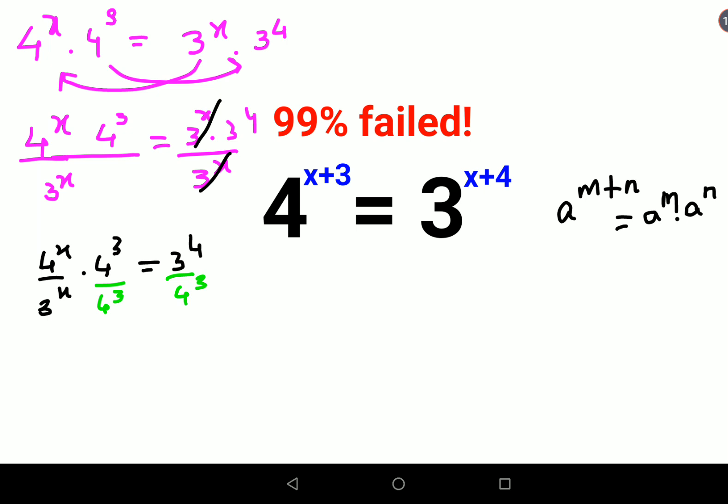So what happens over here is now a raised to m upon b raised to m. Both of them are raised to the same index. You can write this as a upon b the whole raised to m. So this can be written as 4 upon 3 the whole raised to x and this obviously is cancelling. So here you are left with 3 upon 4 times 4 upon 3. Now what else we can do? After this we can't do much.